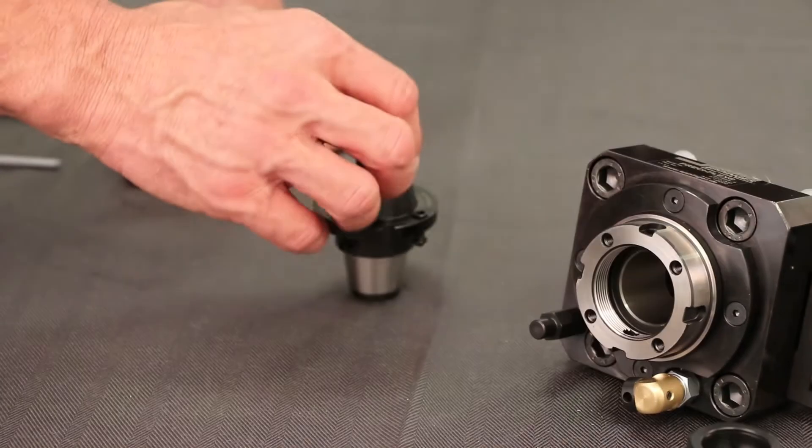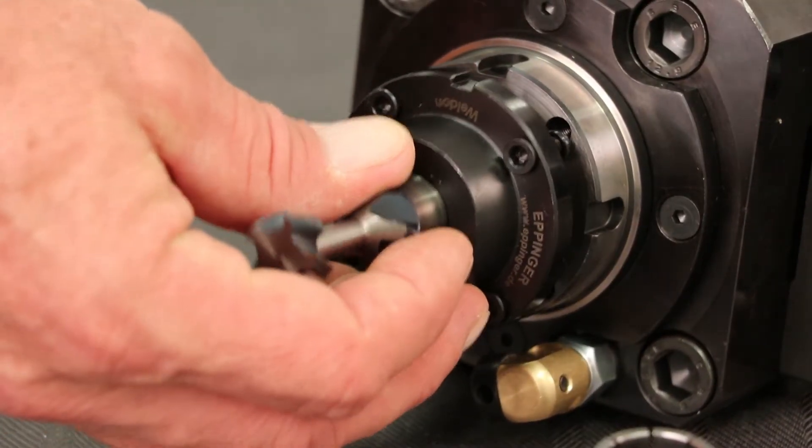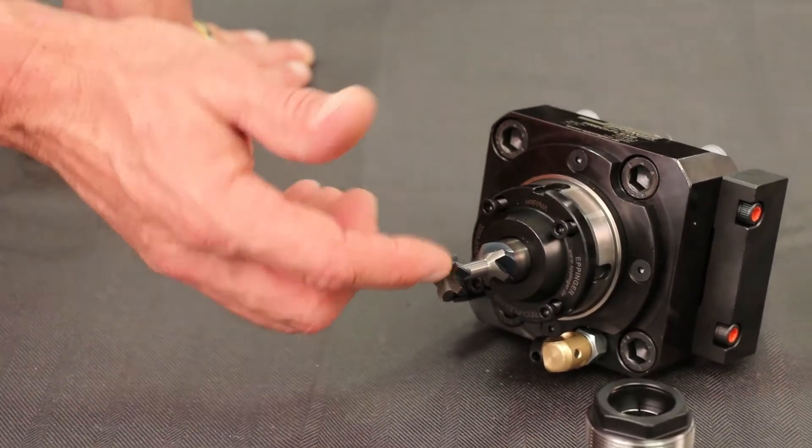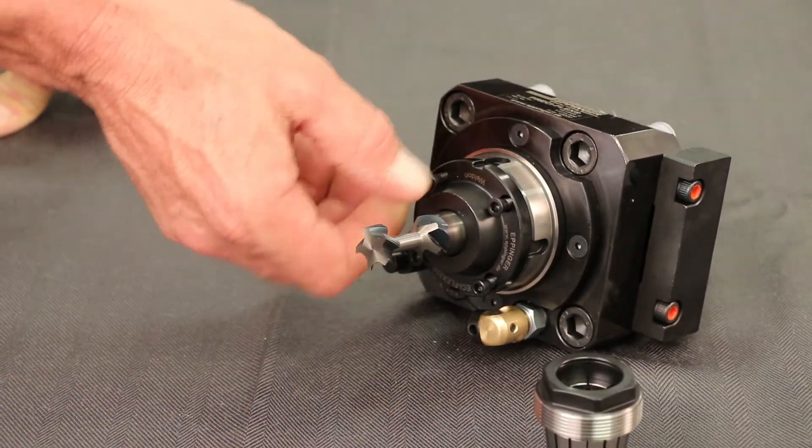However, should you want to go to an exotic holder, an exotic type tooling that requires a special cut, you could just buy an adapter and fasten that to the holder using these four screws.